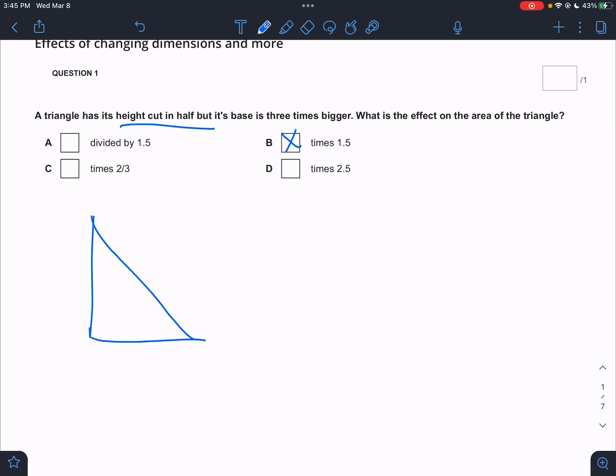This will be kind of an explanation video as well because I'm not making a separate lesson video. So you have a base and a height. The area of a triangle is one half base times height, but its height is cut in half. So that would be one half and the base is three times as big. So it would be three times the base and half the height.